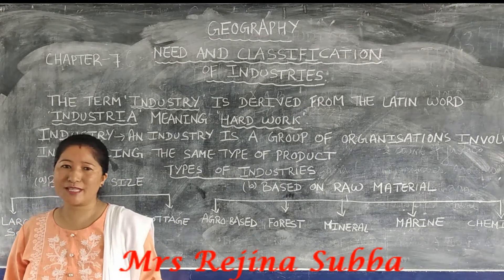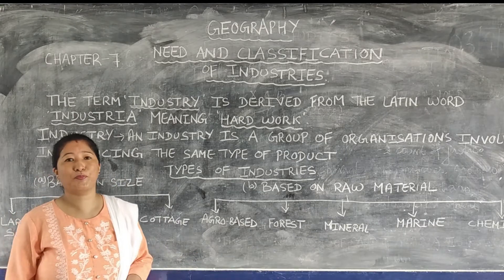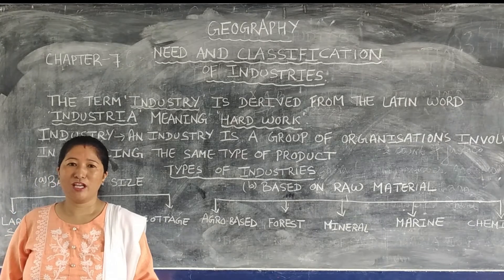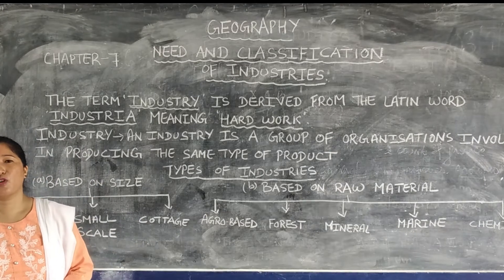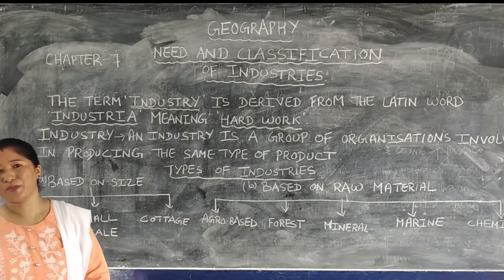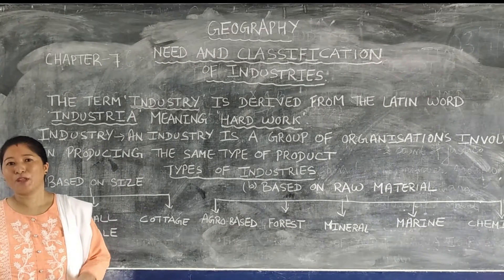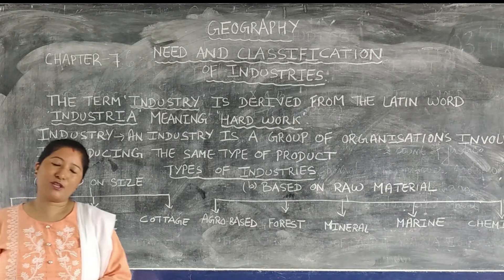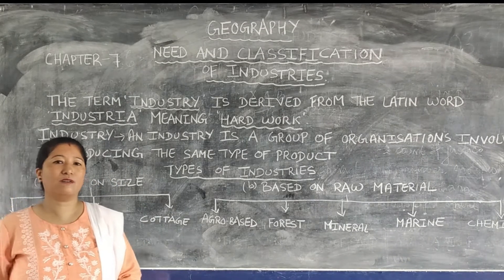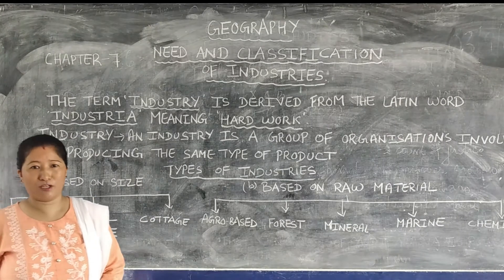Have you ever purchased goods and thought about where it came from, who distributed it? Take the example of your own smartphone. You got it from the shopkeeper, the shopkeeper purchased it from a distributor, the distributor purchased it from the manufacturer, and the manufacturer made that good out of the raw materials available with him. So the manufacturer is the origin of your smartphone.